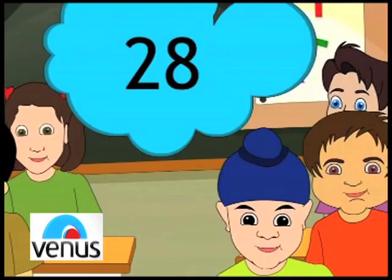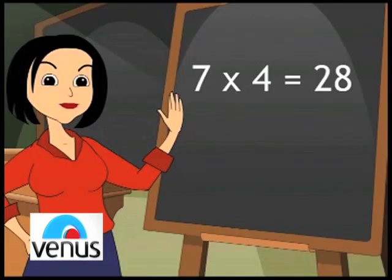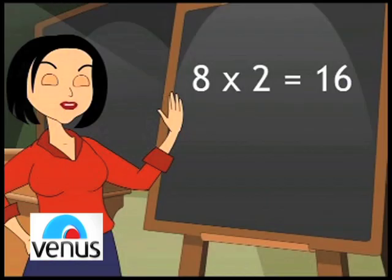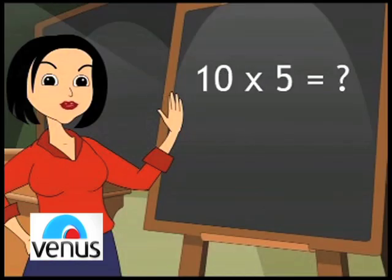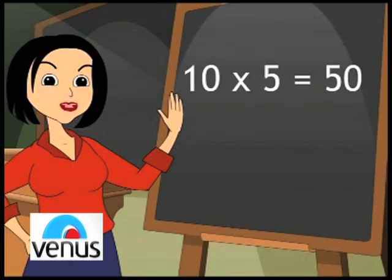Seven fours are? Twenty-eight. So nice. Eight twos are? Sixteen. Very good. Ten fives are? Fifty. Very good.